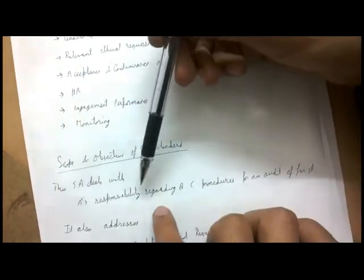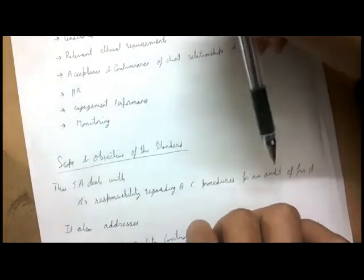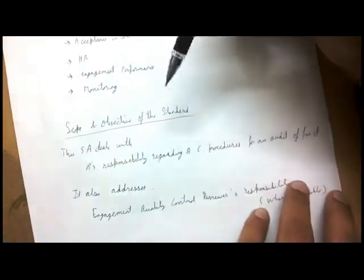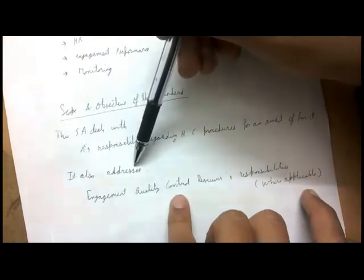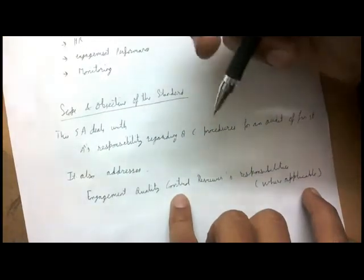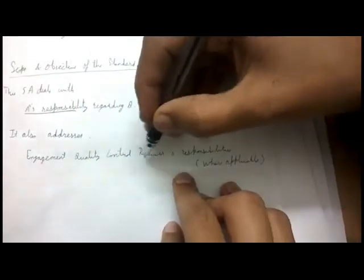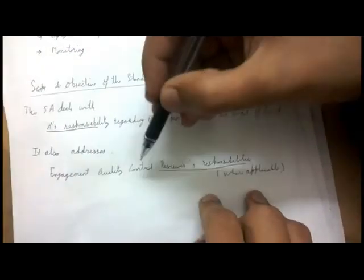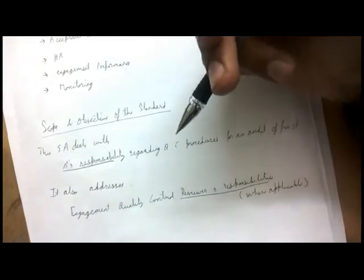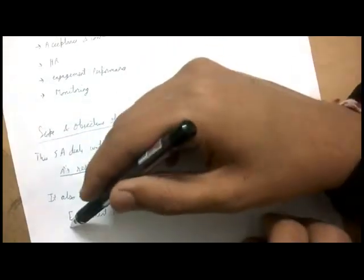The scope and objective of SA 220 deal with the auditor's responsibility regarding quality control procedures for an audit of financial statements — to establish and maintain quality control procedures. The standard is divided into two broad parts: one is the responsibility of the auditor, and the other is the responsibility of the Engagement Quality Control Reviewer (EQCR).